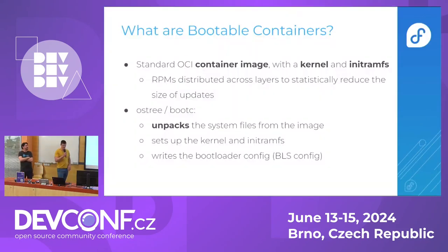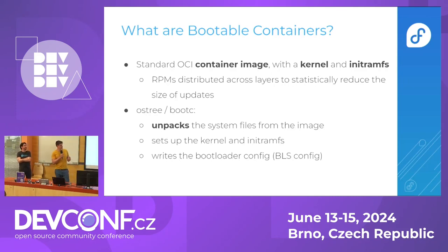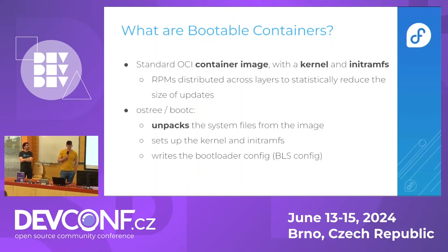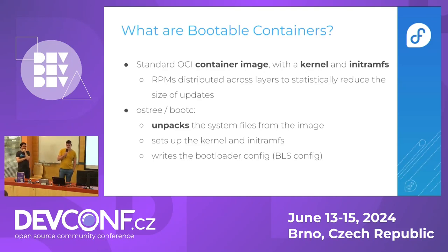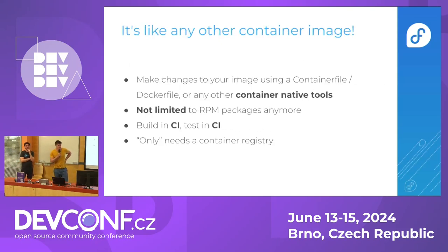So what are bootable containers? This is a really standard OCI image, as you know and love, but with a kernel and some initial ramdisk in there. When we build those images with OSTree, the RPM content is distributed across the layers, so you get less in-flight data, which reduces the size of updates. Once the image is on the system, OSTree or bootc unpacks the content of the image and puts all the bits at the right place — sets up the kernel, the initramfs, and then the bootloader configs.